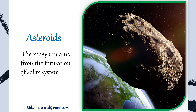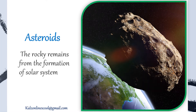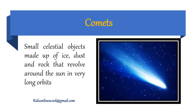Asteroids: the rocky remains from the formation of the solar system. Comets: small celestial objects made up of ice, dust and rock that revolve around the sun in very long orbits.